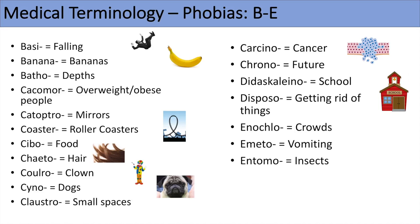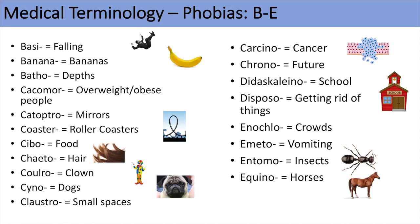The next prefix is entomo, meaning insects, so entomophobia is a fear of insects — think of entomology, the study of insects, to remember this. Another prefix is equino, meaning horses, so equinophobia is a fear of horses. The next prefix is ergo, meaning work, so ergophobia is a fear of work — you can think of ergonomics to remember ergo.